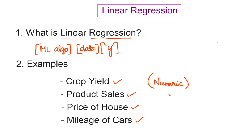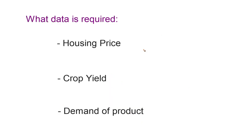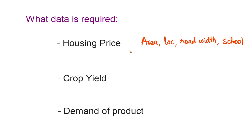How can a machine learning algorithm like linear regression possibly predict something like crop yield or the price of a house? If you think about it, a human expert would look for things like the area of the house, the locality in which the house is located, the road width in front of the house, the schools nearby — things that are helpful in predicting housing prices.